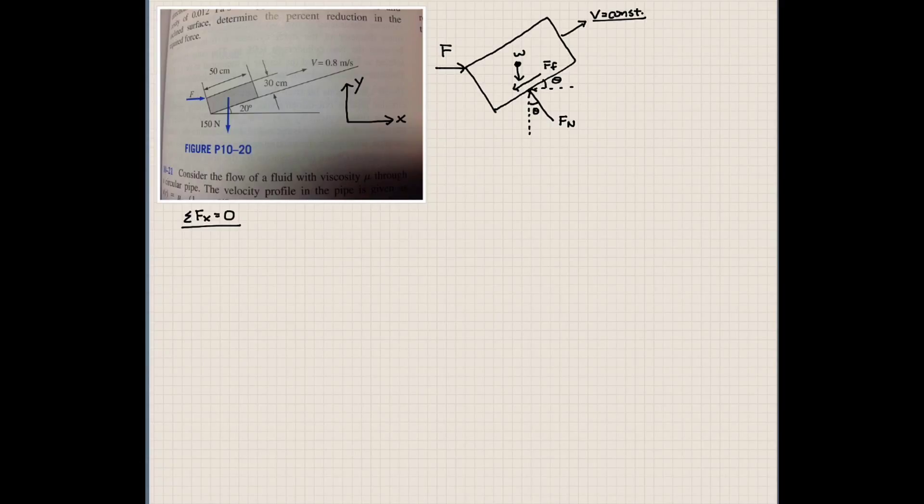So sum of the forces in the x direction, obviously we have our force F. What else do we have? We have a component of the normal force acting to the left. So we would have minus normal force sine theta. And the frictional force also acting to the left. So we'd have minus friction force cosine theta. And that's equal to zero. I think that's all the forces acting in the x direction.